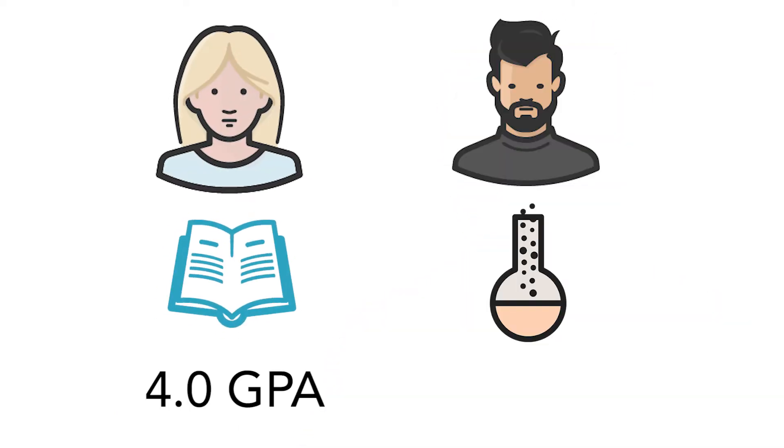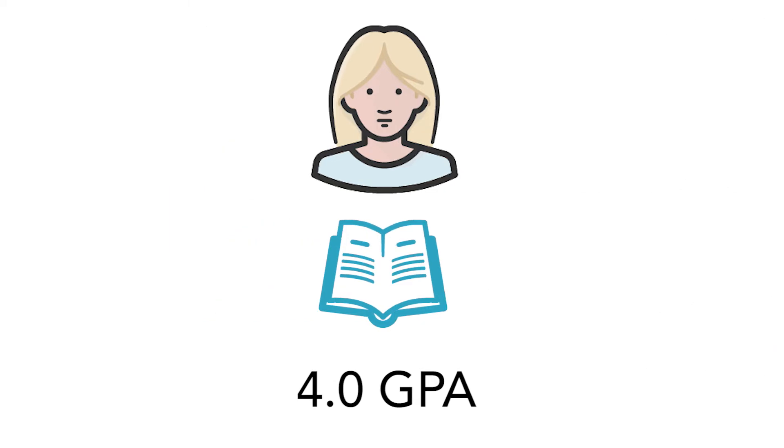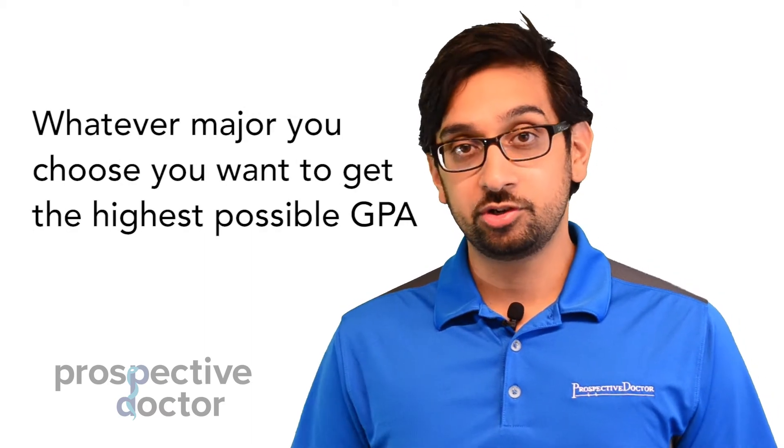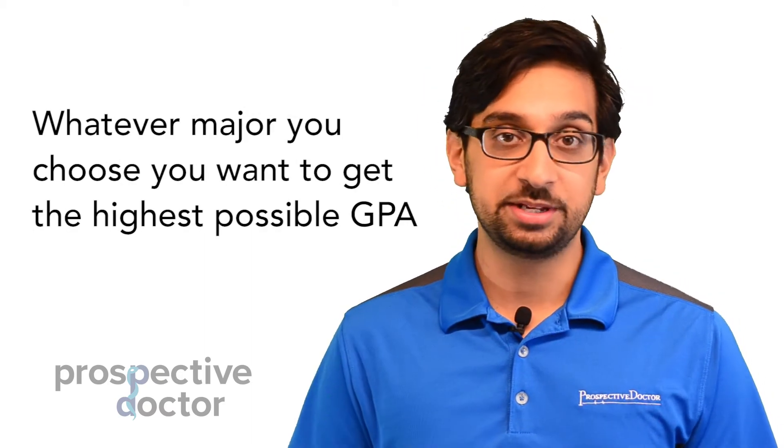An English major with a 4.0 GPA compared to a biomedical engineering major with a 3.2 GPA. Unfortunately the English major always wins out no matter how much more difficult the bioengineering courses may be. Keep in mind that whatever major you choose, you want to get the highest possible GPA.